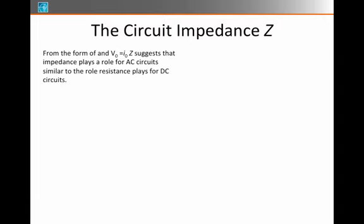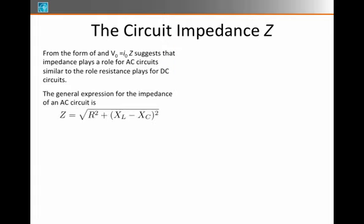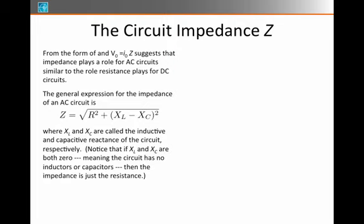So what is this impedance? This is at the heart of how we predict our Ohm's law-like equation V₀ = I₀Z. The general form of impedance is the square root of R² plus (X_L - X_C)². These two things are called reactances, and there's one kind for inductors and one kind for capacitors. If there's no capacitors or inductors, then Z just equals R.